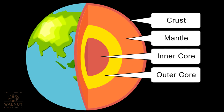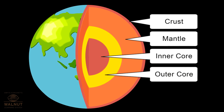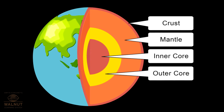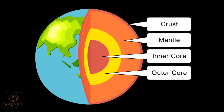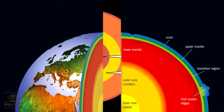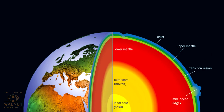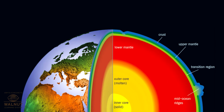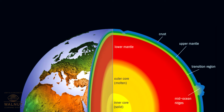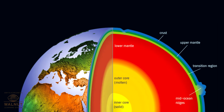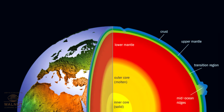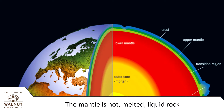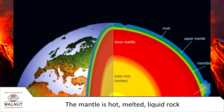The outer shell is the crust, then we have the mantle, and deep down at the center of the Earth, we have the core. As we go inside the Earth, it becomes very hot — so hot that the rock melts down. This melted liquid rock is the mantle.